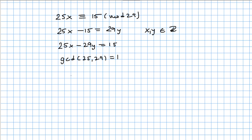The way to do this is to use the Euclidean algorithm with 29 and 25. We start with the bigger number: 29 equals 25 times 1 plus 4. Then we move to 25 and 4: 25 equals 4 times 6 plus 1. Then 4 equals 1 times 4 plus 0.